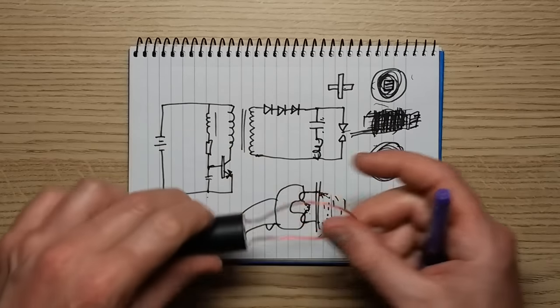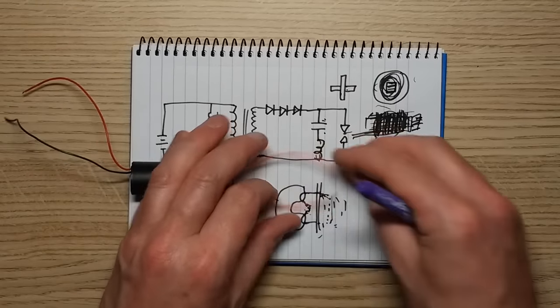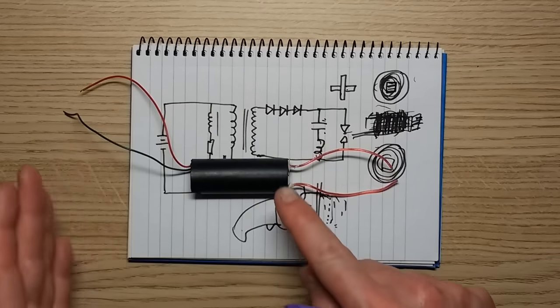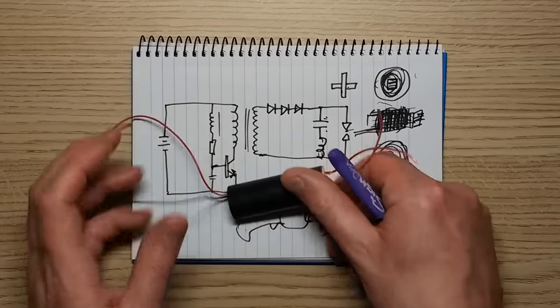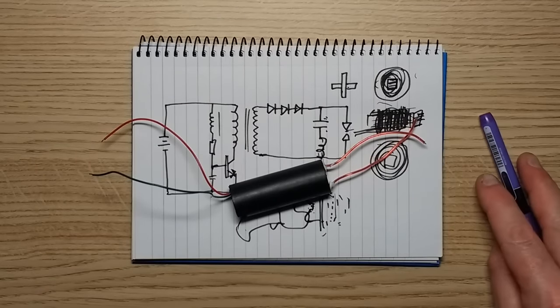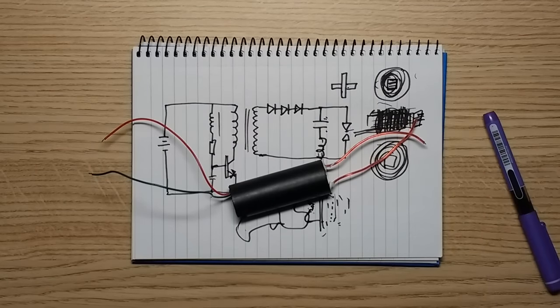So yes, stun guns, they're very interesting. The circuitry isn't that complex. The construction is complex and these little modules being sold on eBay are almost certainly intended for use as stun guns.